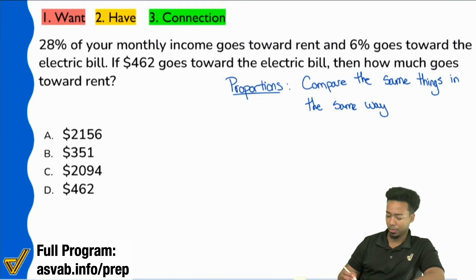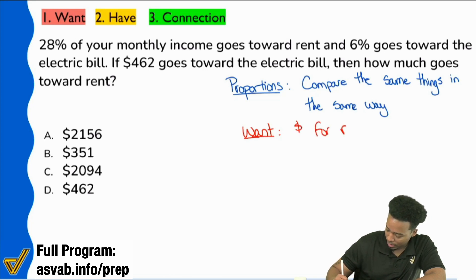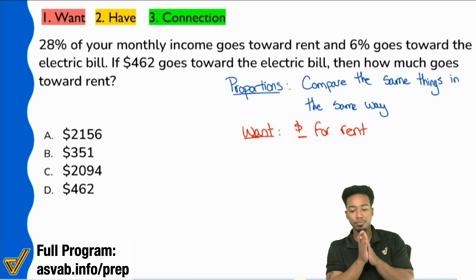So let's go ahead and take a look here. First, what are we looking for? Well, the question says how much goes towards rent? How much money? Look at the answer choices: money. So I'm going to write that down. I'm looking for, what I want is money for rent. Is that fair to you, everybody? We're looking for the amount of money for rent.